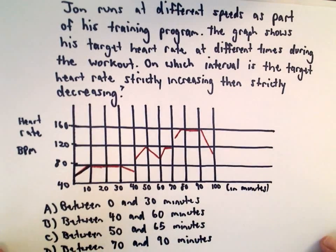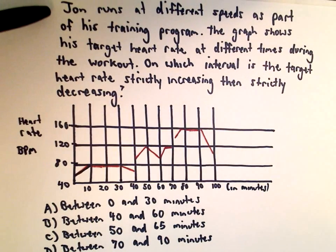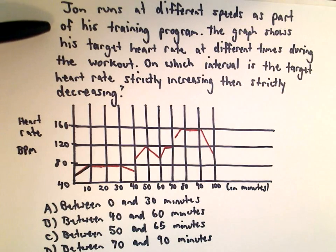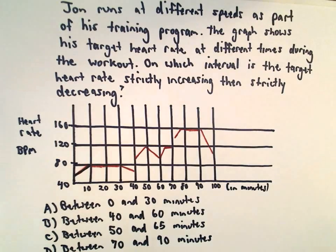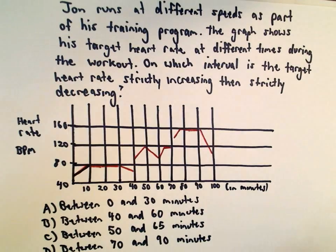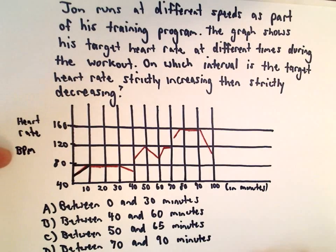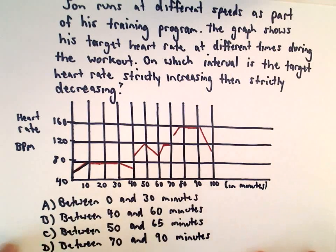So let's jump in here. We've got a little graph. It says Jon runs at different speeds as part of his training program, and the graph shows his target heart rate at different times during the workout. We want to know on which interval is the target heart rate strictly increasing then strictly decreasing. The y-axis gives his heart rate in beats per minute, and the x-axis, the horizontal axis, gives the time in minutes after he's started exercising.